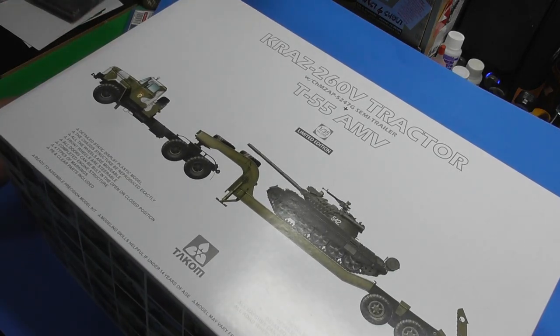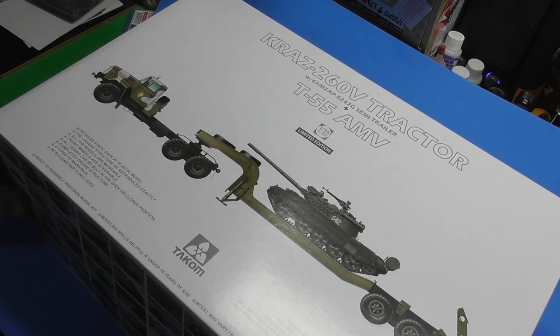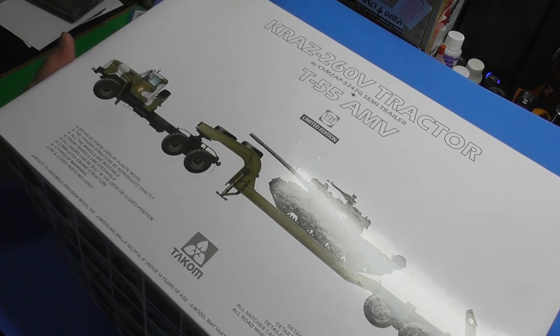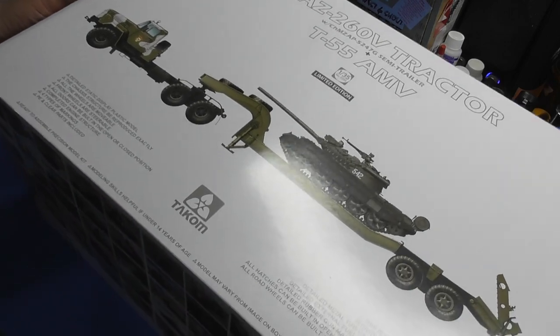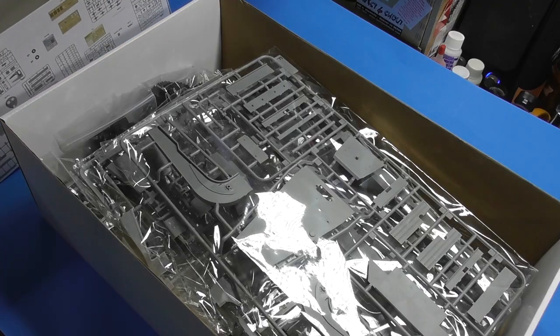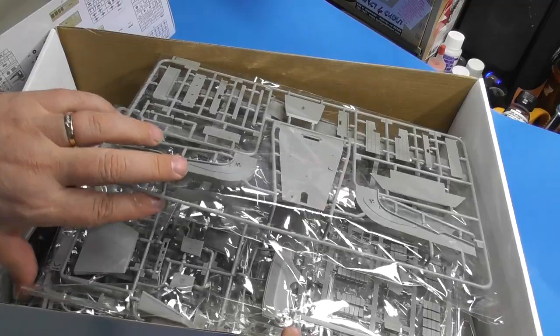So with that, there's a tool around the box. Does it say how many parts are in here? It does not. But let me take the cover off. There you go. This box is full of sprues.